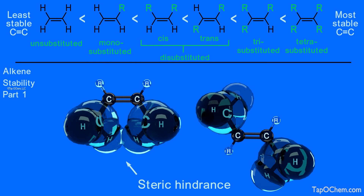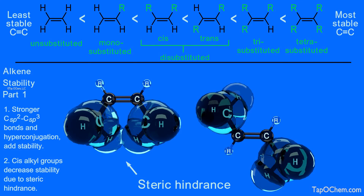In summary, the more substituted the carbon-carbon double bond, the more stable the alkene. This is due to increasing the stronger carbon-sp2 to carbon-sp3 bonds and more hyperconjugation. For disubstituted alkenes, cis alkenes are less stable than trans alkenes due to steric hindrance between the cis alkyl groups. In order to find out how we determine alkene stability, view the Alkene Stability Part 2 animation.